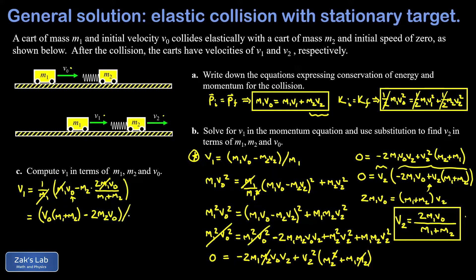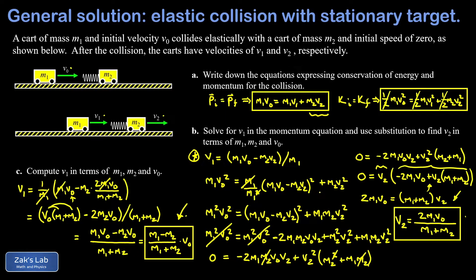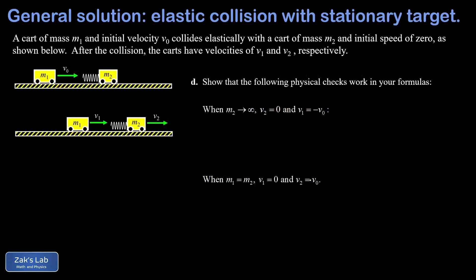Distributing v_naught: the m2*v_naught and negative 2*m2*v_naught combine to give negative m2*v_naught in the numerator. So v1 equals (m1*v_naught minus m2*v_naught) divided by (m1 plus m2), which simplifies beautifully to v1 equals (m1 minus m2)/(m1 plus m2) times v_naught. The general solutions are: v2 = 2*m1*v_naught/(m1 plus m2) and v1 = (m1 minus m2)/(m1 plus m2)*v_naught.